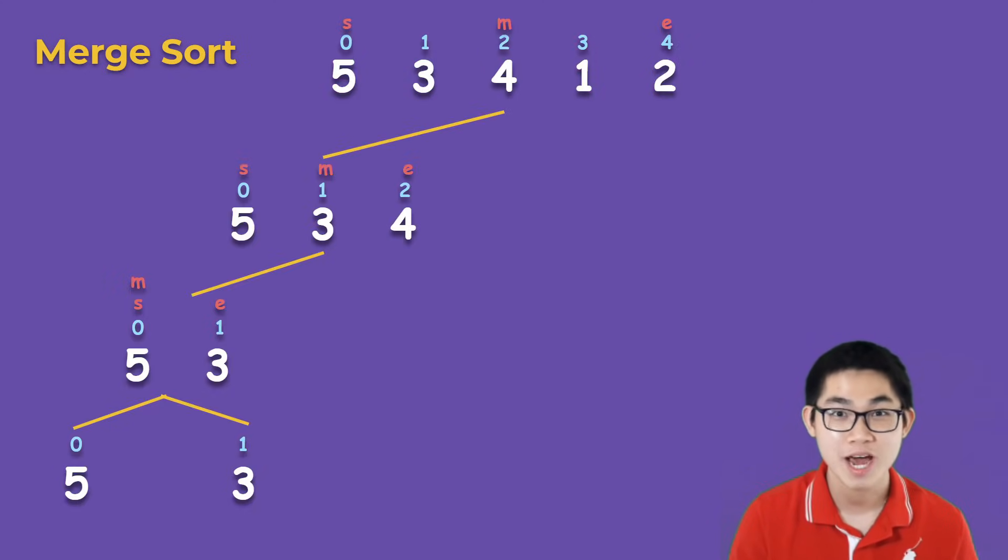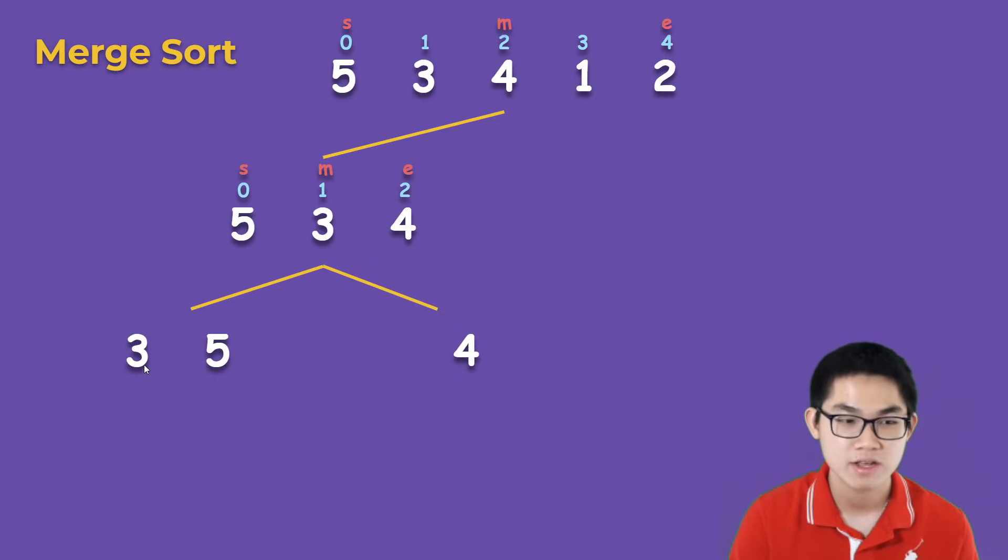Now I want you to try merging five and three together. Notice here the temporary array will be of size two, and after you merge them you get three and five. And then try to merge three, five, and four together, and you'll get three, four, five.